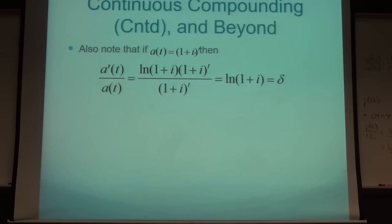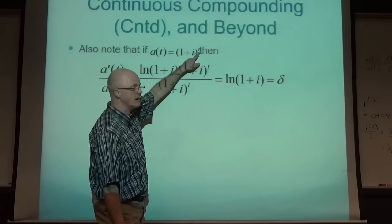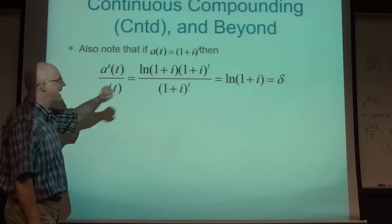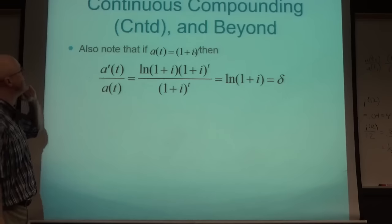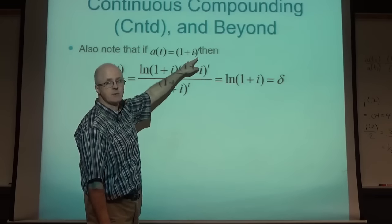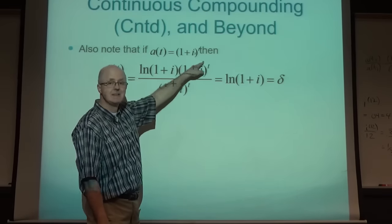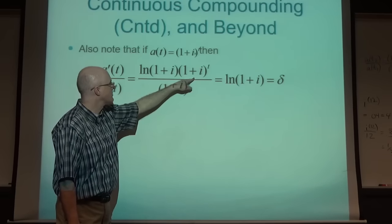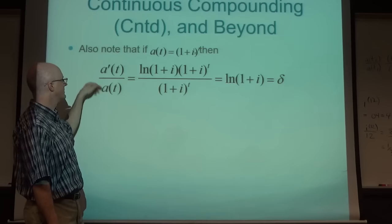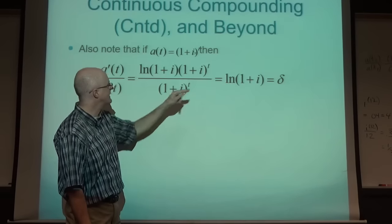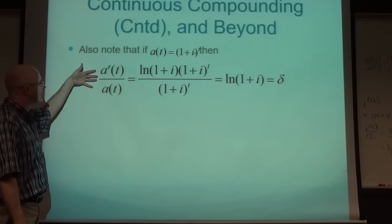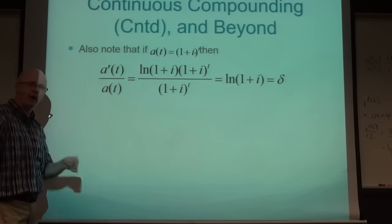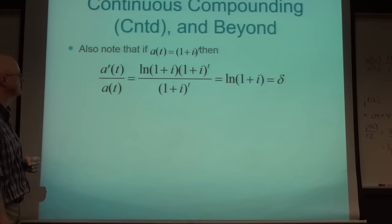For compound interest where a(t) = (1+i)^t, delta can also be found as a'(t)/a(t). This is an exponential function - differentiating it requires multiplying by ln(1+i) before the exponential. Dividing by a(t) = (1+i)^t, those cancel, leaving natural log of (1+i) = delta. In other words, delta measures the constant relative rate of change for this exponential growth function.